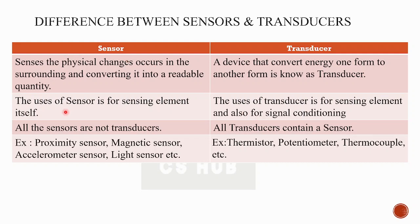Let's look at a few examples. Sensors include: Proximity Sensor, Magnetic Sensor, Light Sensor, Accelerometer Sensor. Some names are also called Thermistor, Potentiometer, Thermocouple, etc. In the first module, we will learn a few types of transducers and sensors. For the time being, understand what a sensor is, what a transducer is, and what is the major difference between them.